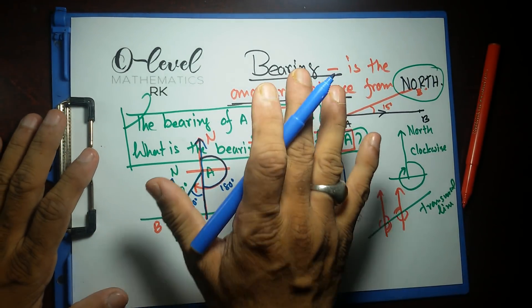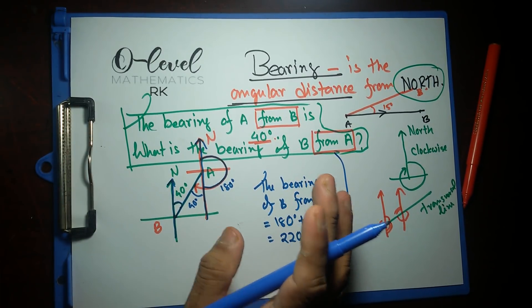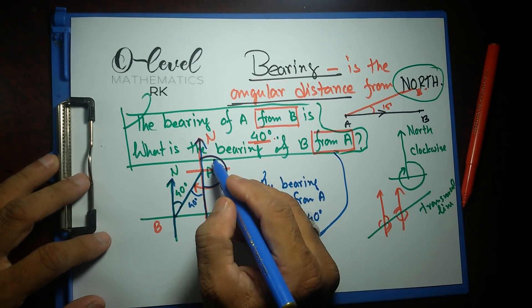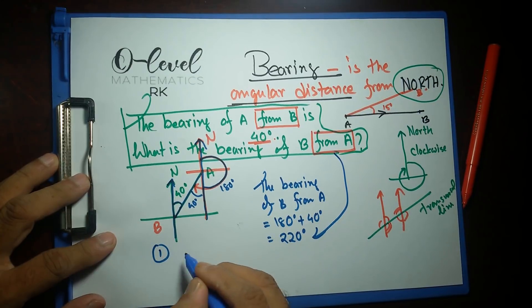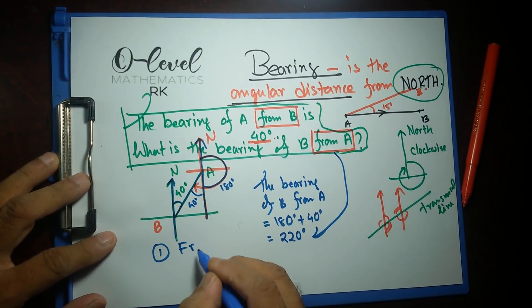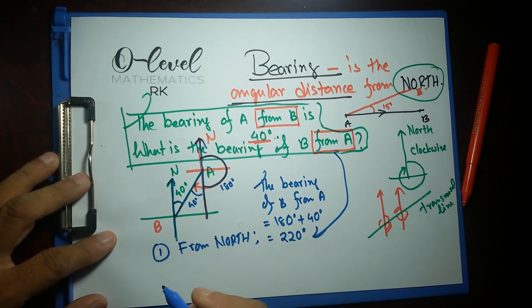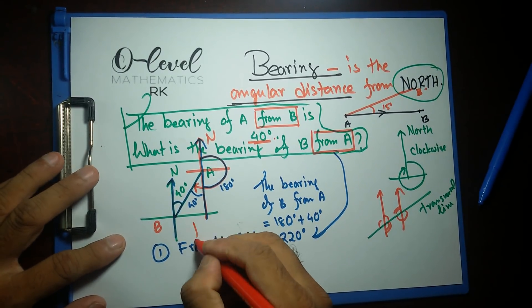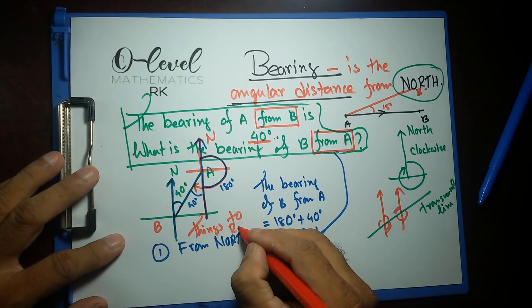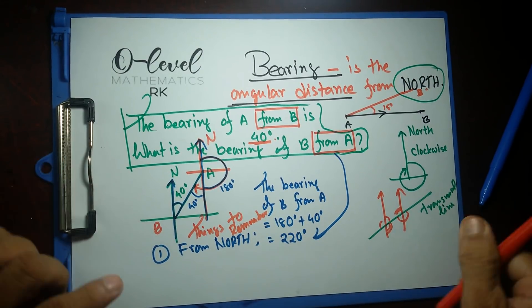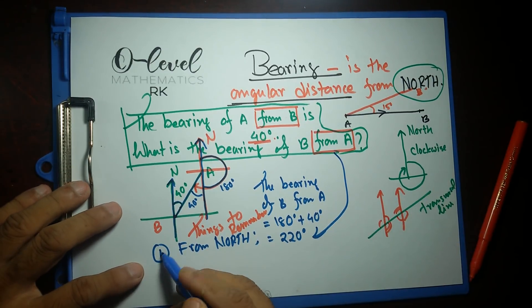Now, to solve bearing problems, you have to remember a few things. One thing: always the angle is from north. The angle you are trying to find out is from north. Measure the angle or calculate the angle from north. That's the first thing. These are things to remember. From north, always measure from north. Number one.